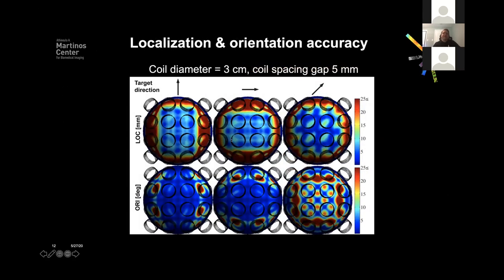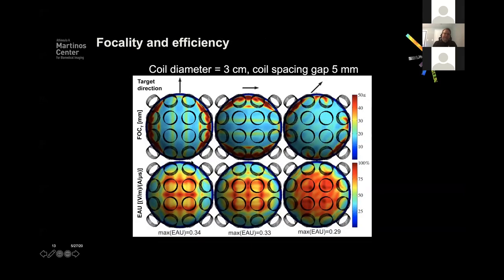We can generate maps showing localization error and orientation error depending on the target direction — whether from bottom to top, left to right, or 45 degrees. What becomes immediately clear is that these metrics depend strongly on spatial distribution: where exactly you're looking. If you rotate the target 90 degrees, the error metrics rotate by 90 degrees due to array symmetry. At 45 degrees, some points become difficult to stimulate accurately. The take-home message is that these maps are not uniform — they have a spatial dependency we can further analyze.